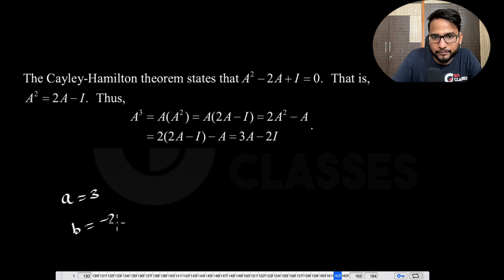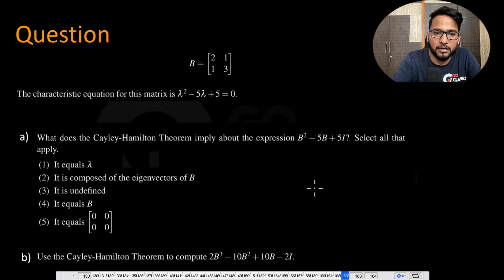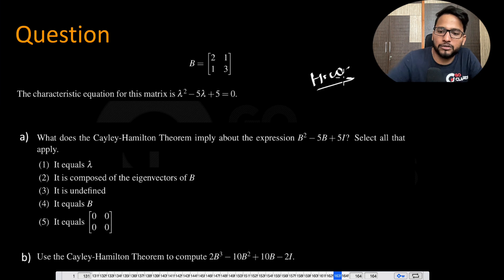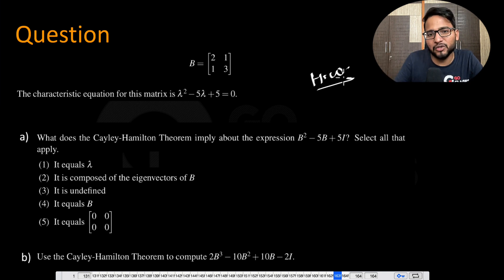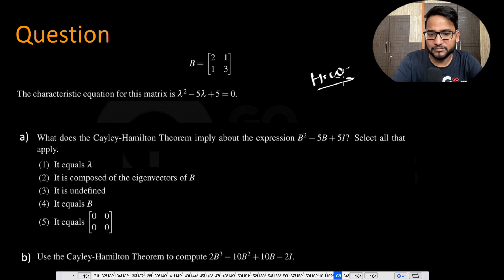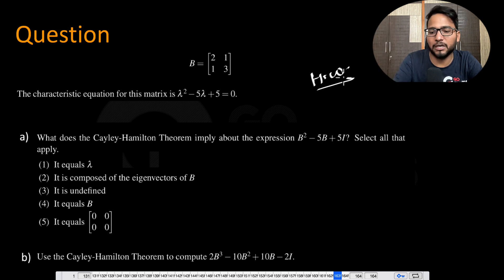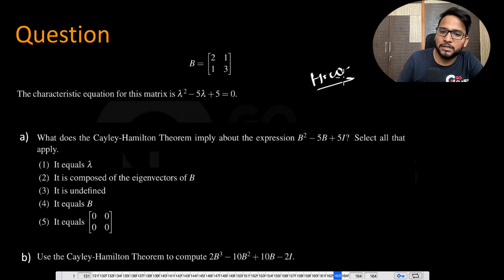The answer is 3A - 2I, so a = 3 and b = -2. The last question can be tried as homework. That's all about the Cayley-Hamilton theorem — a very easy theorem, but you have to know where to apply it. Whenever you see powers of A or the inverse of A, think about this theorem.